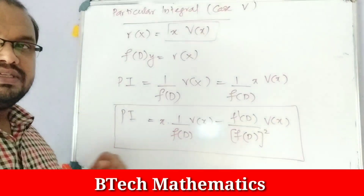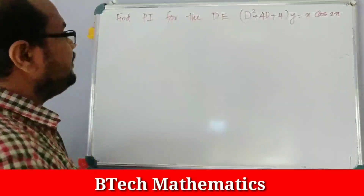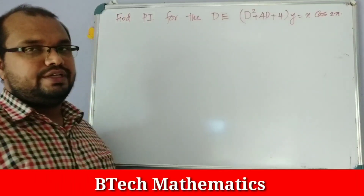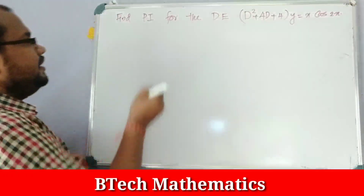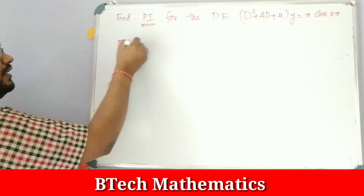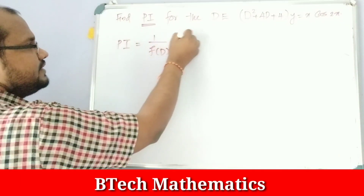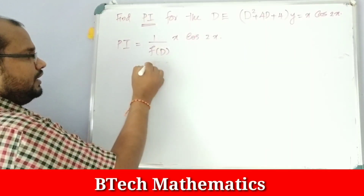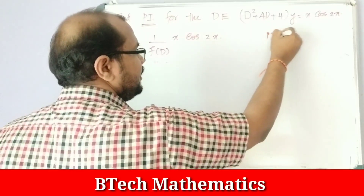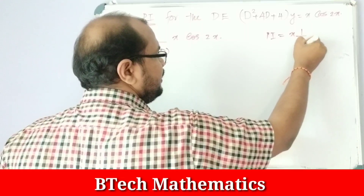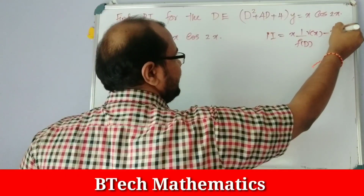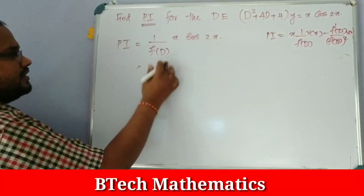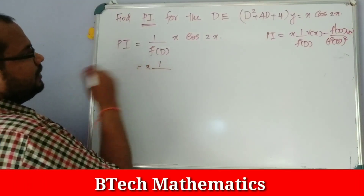Now let's see an example question. Find the particular integral for the differential equation (D² + 4D + 4)y = x·cos(2x). The PI equals 1/f(D) into x·cos(2x), which we apply as: x · [1/f(D)] · cos(2x) minus [f'(D)/f(D)²] · cos(2x).